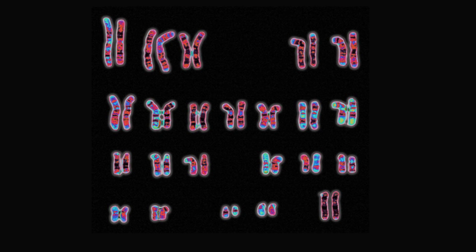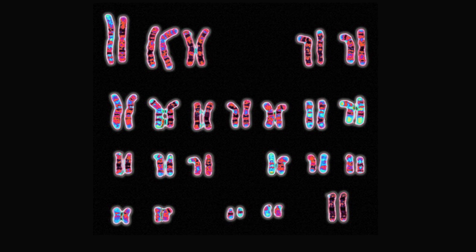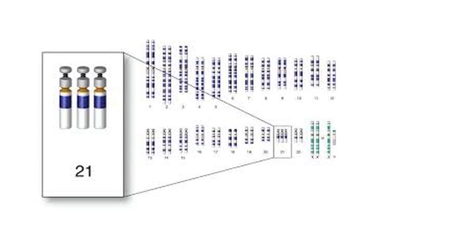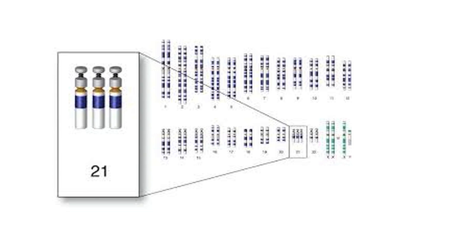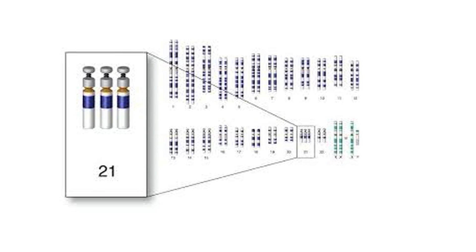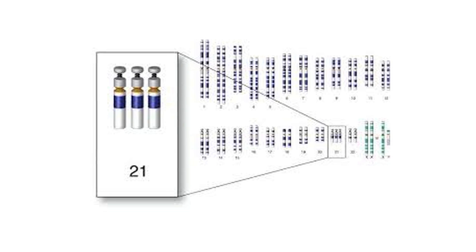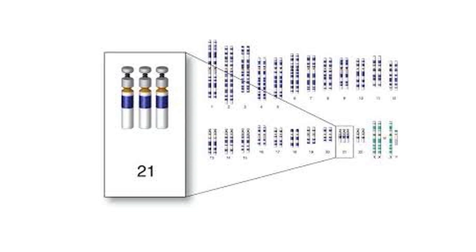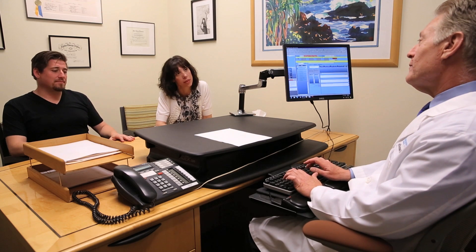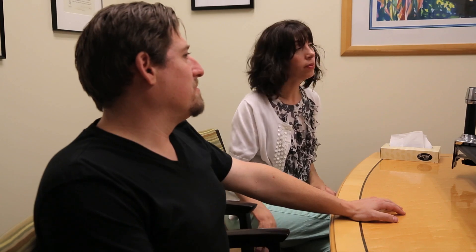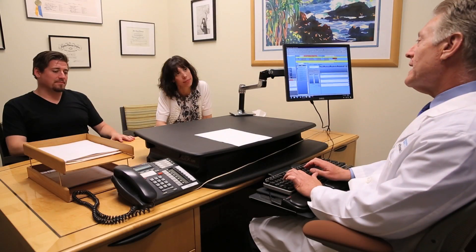Structural chromosome disorders occur because of a random rearrangement of chromosomes that carry your genes, resulting in an abnormal number of chromosomes. One of the more common disorders that people have heard of is Down syndrome, in which there are three instead of the normal two copies of chromosome 21. There are abnormalities of each of the chromosomes that can occur in a pregnancy or embryo, many of which are incompatible with life.